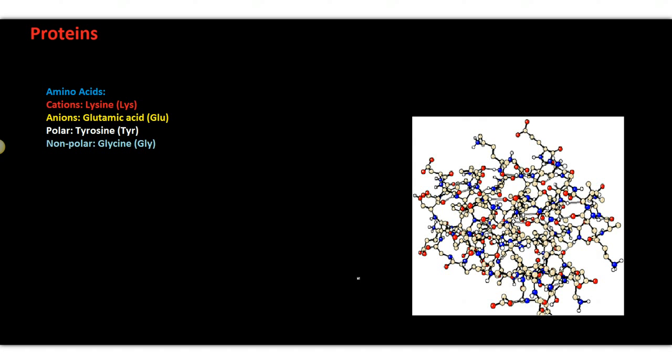And here I have some examples. You can see there, lysine is an example of a cation with a positive charge. Glutamic acid is an example of an amino acid that is an anion with a negative charge. Tyrosine is an example of a neutral charged molecule that has a positive end and a negative end, or a polar molecule. And then glycine is an uncharged, neutral charged molecule that does not have a polar end.